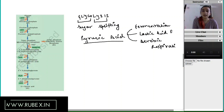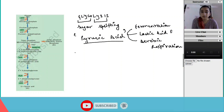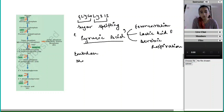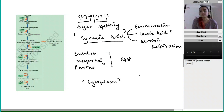Glycolysis is the first step of respiration and its most important step is the formation of pyruvic acid. It was discovered by three scientists — Embden, Meyerhof, and Parnas — and for this reason glycolysis is also known as the EMP pathway. The initials of their names make up EMP. This reaction involves the conversion of glucose to pyruvic acid and occurs in the cytoplasm of the cell. It is a universal reaction because it occurs in all respiring cells.